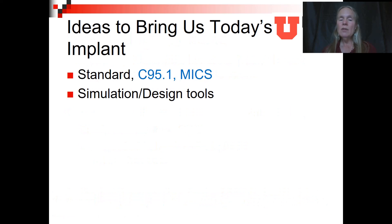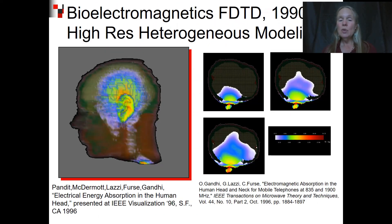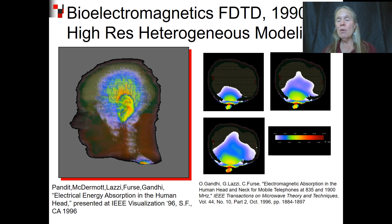With a standard, we also needed a way to design our antennas. Simulation tools in the 1990s were just beginning to be heterogeneous. Prior to that, we had used very canonical models such as spheres and cylinders, but the inside of a person doesn't look at all like a sphere or a cylinder. Heterogeneous modeling in the 1990s enabled us to figure out how much power went into the head from an external device, and also how much power was passed around in the body from an internal device.